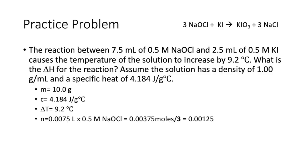This is our list of variables here. The mass is 10 grams. Our C is the same as water. Our change in temperature is 9.2 degrees Celsius. And then for N, we're doing, again, the number of moles of our NaOCl, but we divide by 3 because its coefficient in this chemical reaction is 3. So, it's the number of moles of the reactant divided by its stoichiometric coefficient equals our N, which is 0.00125. And if we calculate delta H, we should get negative 308 kilojoules per mole.